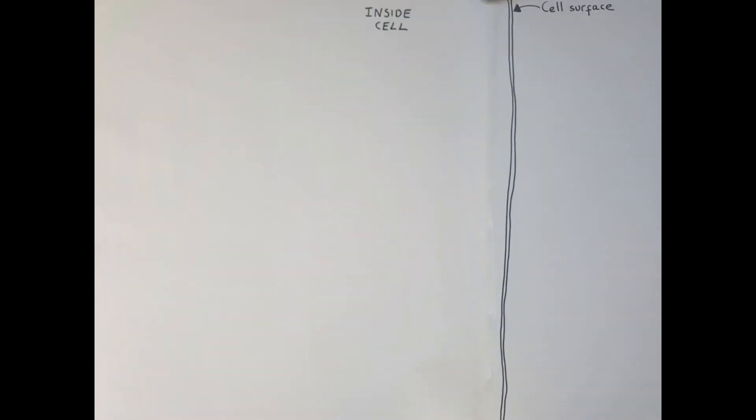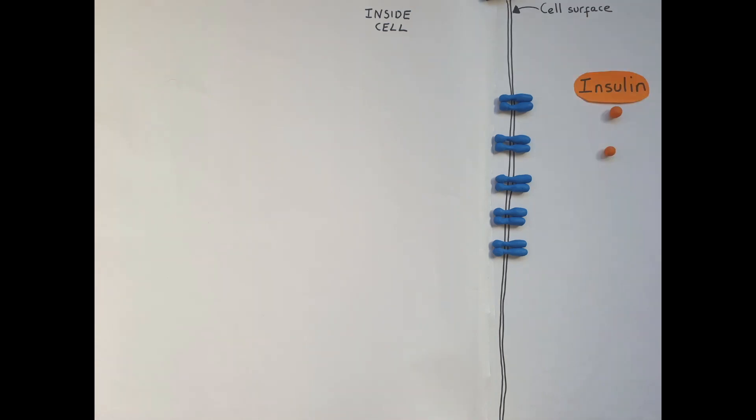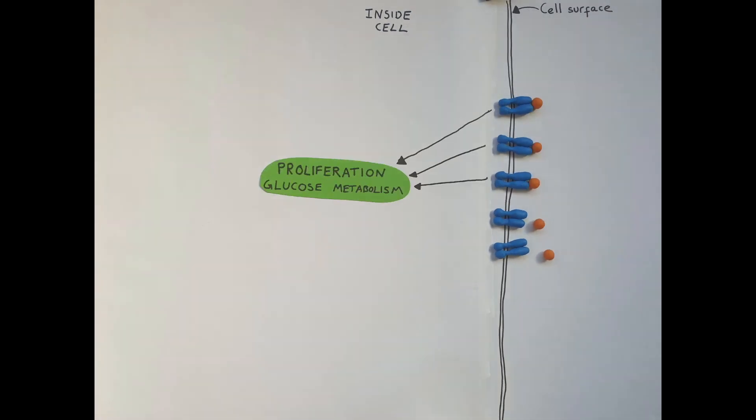Cells display proteins at their surface to respond to environmental cues. One example is the insulin receptor. The insulin receptor binds to insulin and then strongly stimulates proliferation and glucose metabolism.